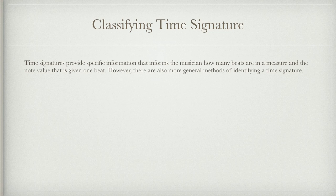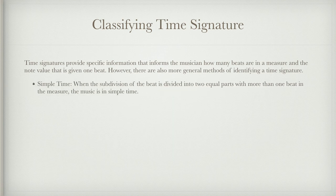When classifying time signatures, they provide specific information telling the musician how many beats are in a measure and the note value given one beat. There are also more general methods of identifying a time signature. With simple time, the subdivision of the beat is divided into two equal parts with more than one beat in the measure.